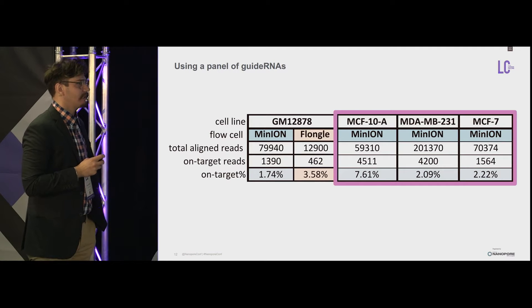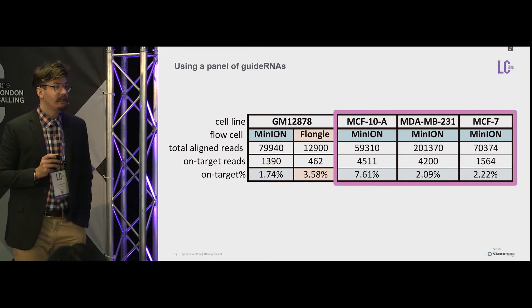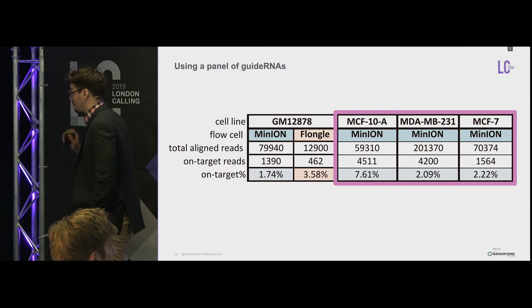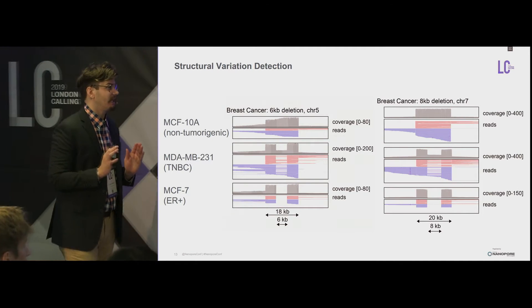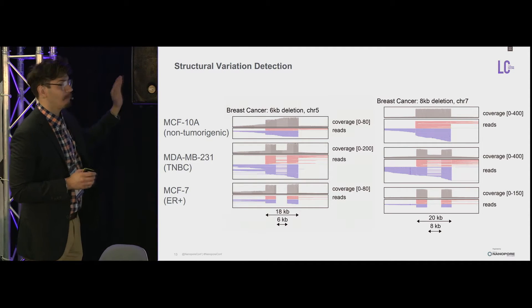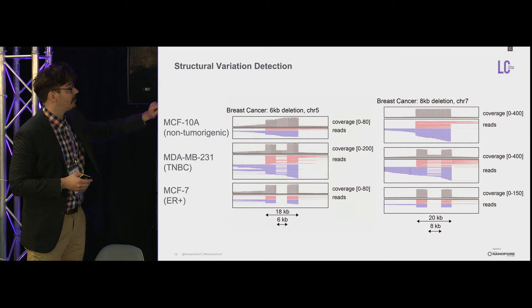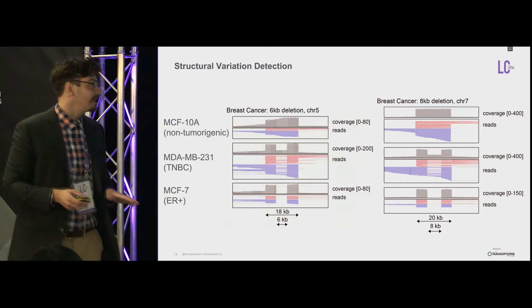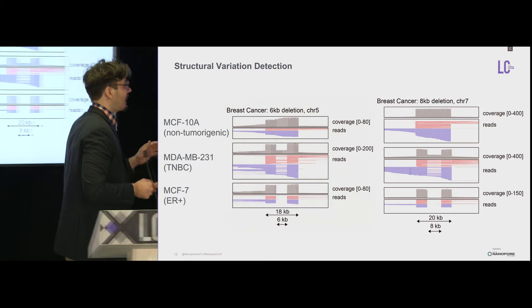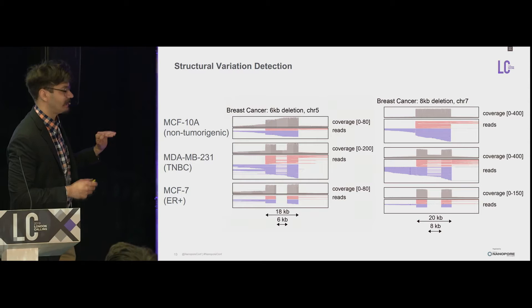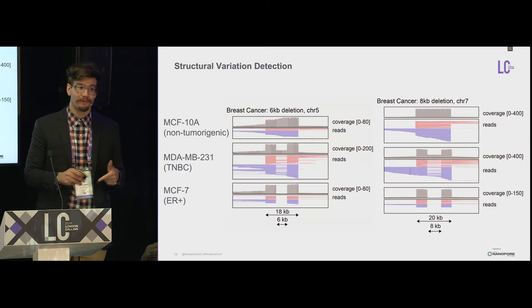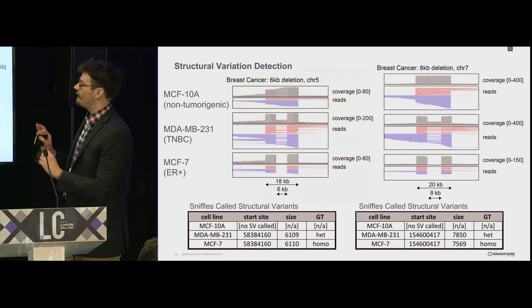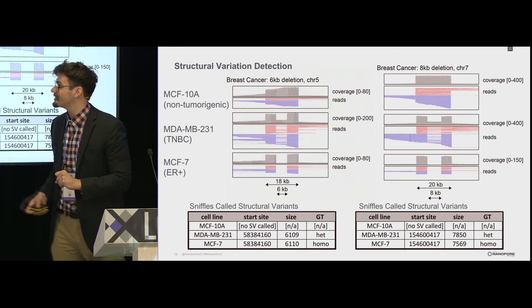Using these breast cell lines to look at structural variation: my colleague Isaac Lee did whole genome nanopore sequencing on these cell lines and found evidence of structural variation. I flanked those supposed deletion break sites by about 5 kb on either side. In the non-tumorigenic MCF10A cell line, we don't see any evidence of structural variation. But in the triple negative breast cell line MDA-MB231, we see reads going into the deletion site while other reads start on one side and continue on the other. In the MCF7 line, no reads go into the deletion breakpoints. We interpreted this as a heterozygous deletion in MDA-MB231 and a homozygous deletion in MCF7. Passing this data to the SNIFFLES structural variant caller — developed by Fritz Sedlicek — confirmed deletions as heterozygous in MDA-MB231 and homozygous in MCF7.